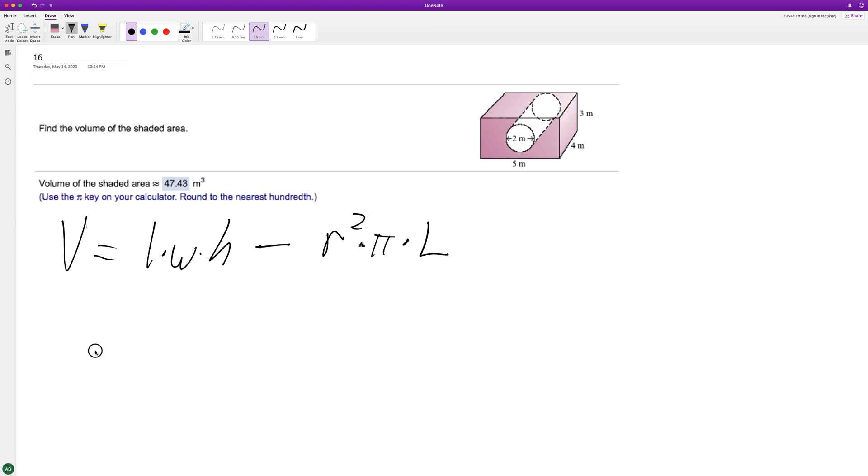which is 4 in that case. So we're going to get 4 meters times 5 meters times 3 meters minus 1 squared, because half of 2 is 1, times pi times length, which is going to be 4.